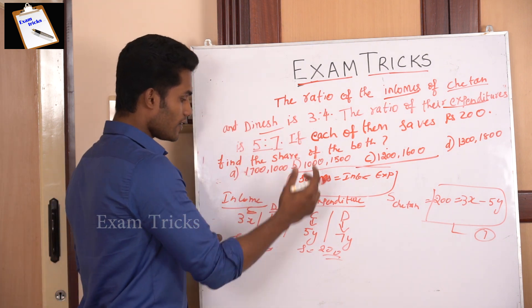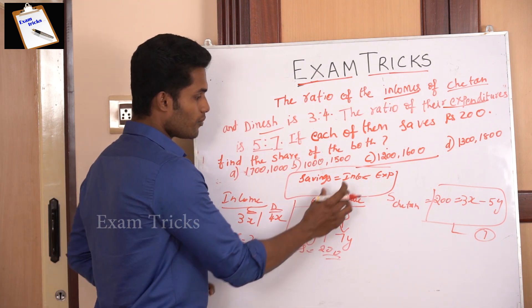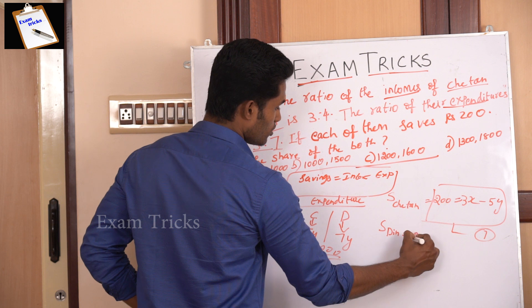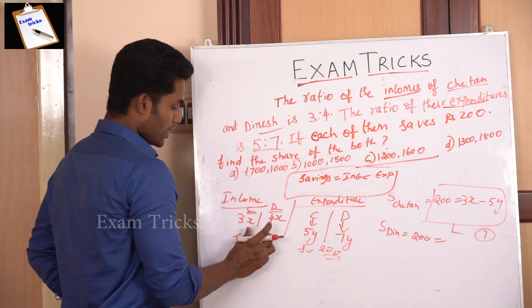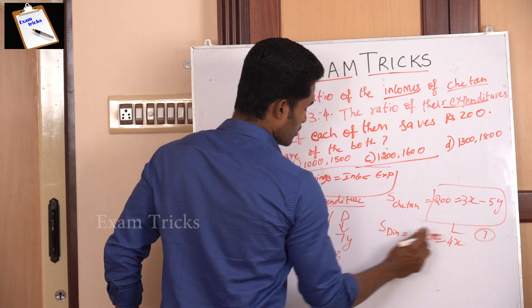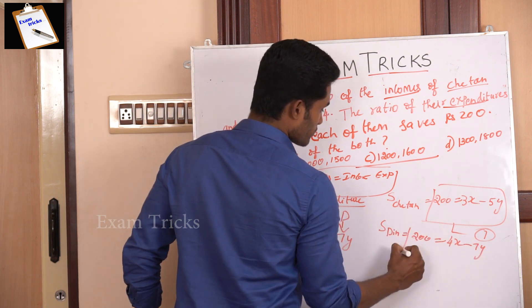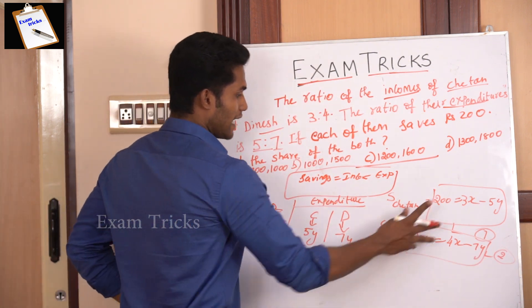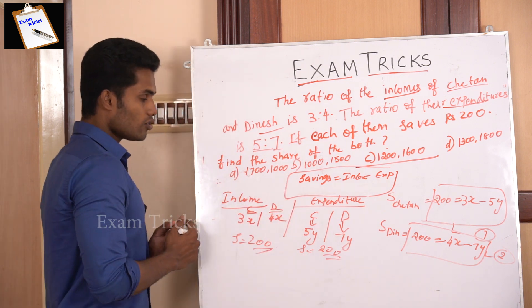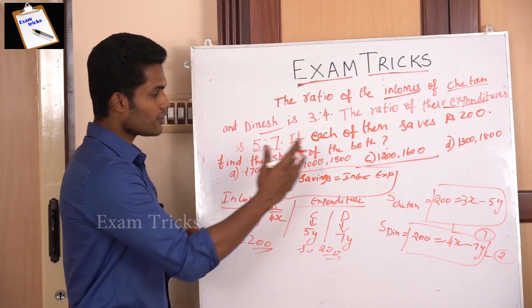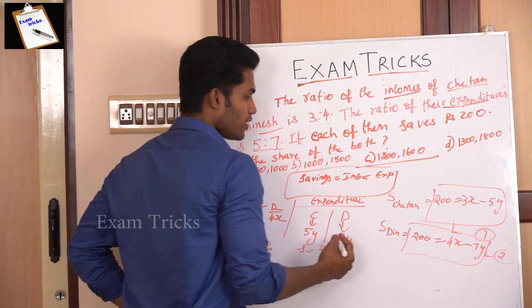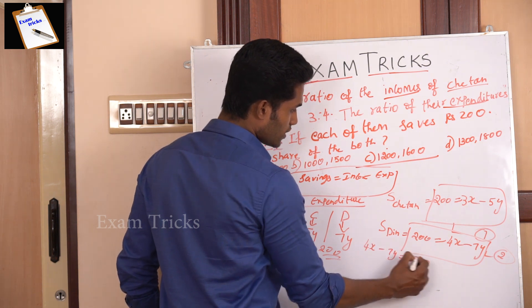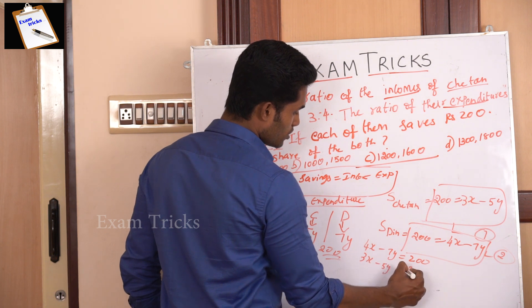Now for Dinesh's savings: income of Dinesh minus expenditure of Dinesh equals 200, so 4x minus 7y equals 200. This is equation number two. We now have two equations with two unknown variables x and y.